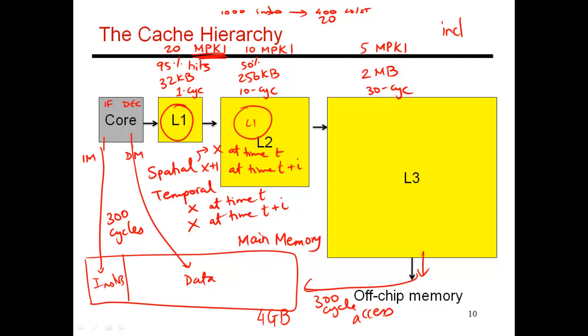So an inclusive hierarchy will reduce your miss rate because effective capacity of the L2 is lowered. Only out of this 256 kilobytes of data, only 224 kilobytes is really new stuff not already looked up in the L1.